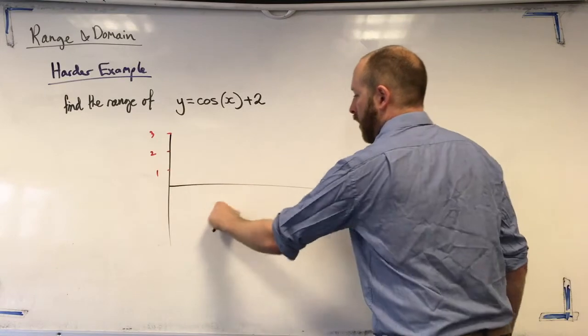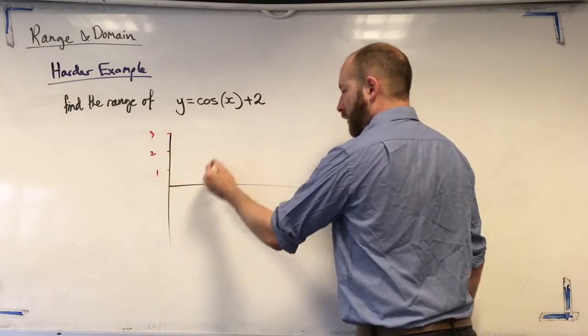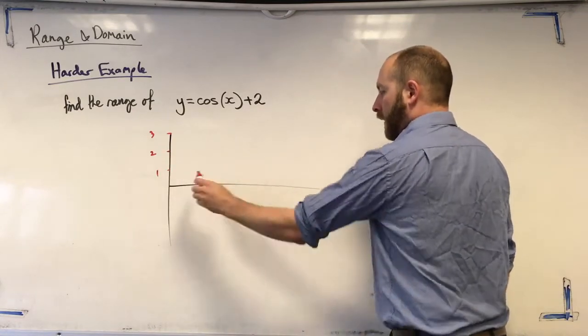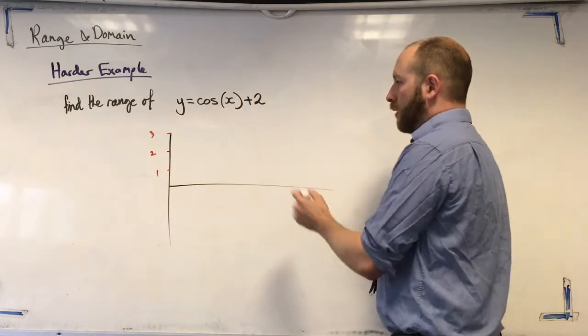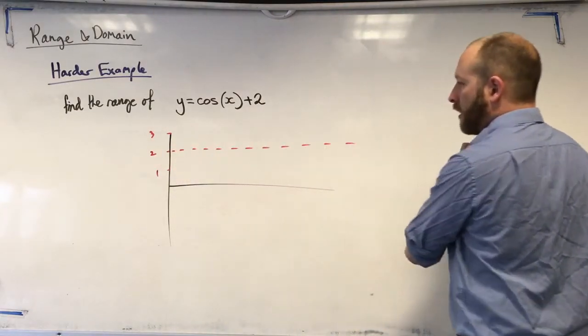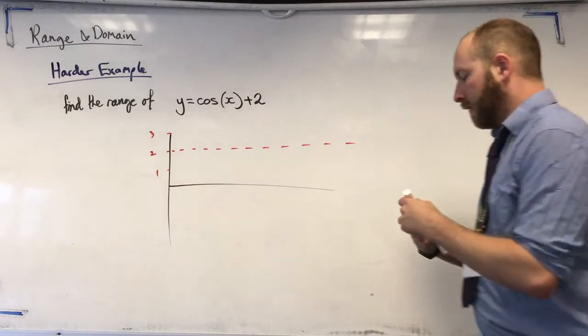Cos normally starts at 1, goes down to 0, kind of oscillates around the x-axis. Because it's up 2, though, I'm going to pretend we've moved our x-axis up 2, and I'm just going to sketch it here instead.